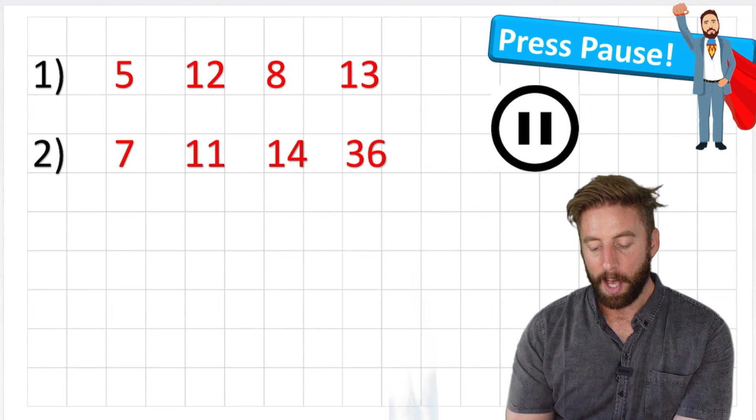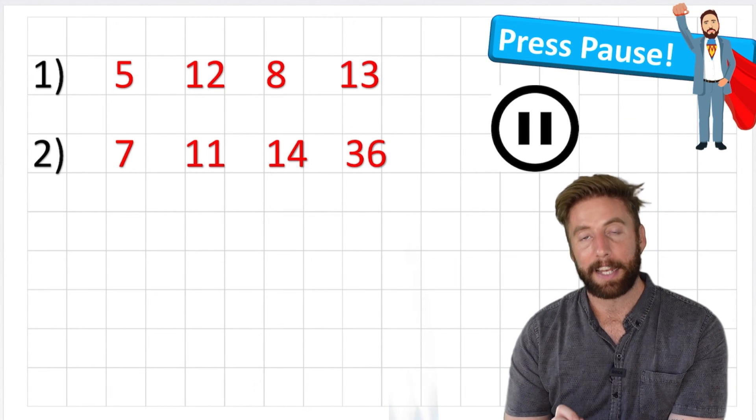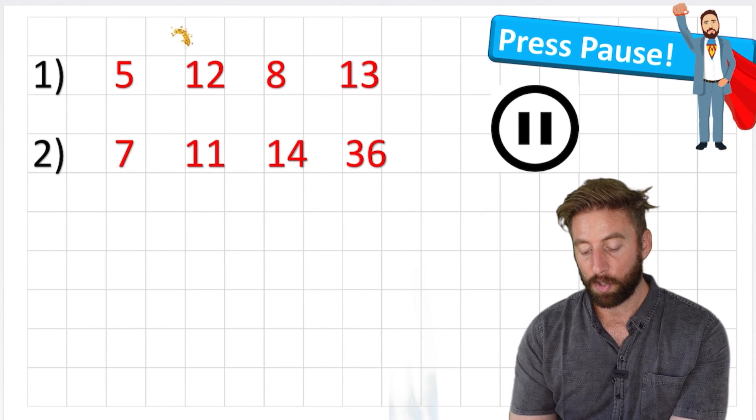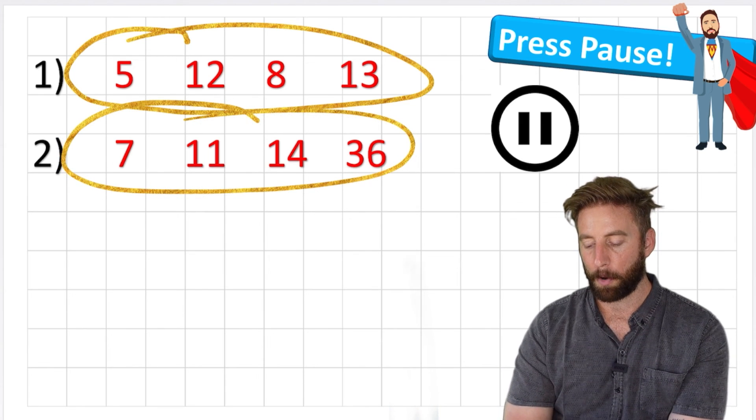Let's have a look at these two questions. I want you to have a look at these four numbers and decide which ones are composite and which ones are prime. So have a look at these two sets of four numbers and decide which are prime and which are composite. Put your answers into the comments section below, I'm going to mark every one.